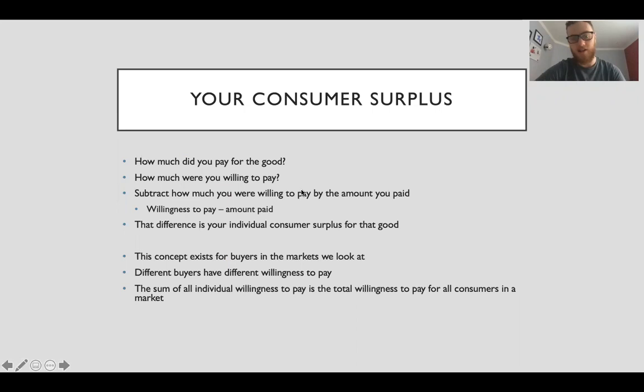How much did you pay for the good? Me, I paid $30. How much were you willing to pay? Me, $50. Subtract how much you were willing to pay by the amount you paid. That's $50 minus $30. That difference is your individual consumer surplus for the good.